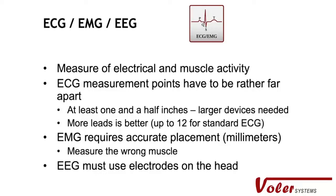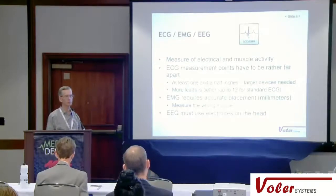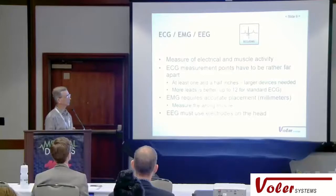ECG for the heart, EMG for muscles, and EEG for the brain all measure electrical signals. They all need electrodes, and people would like dry electrodes — getting a wet electrode and applying it with a wearable device is inconvenient. For ECG, it's important to have separation. On the chest, one and a half inches works. If you look at the Apple Watch, they're measuring ECG on the wrist, but what you may not have noticed is you have to reach over with the other hand and touch the watch — so they're actually getting from one hand to the other, far apart.